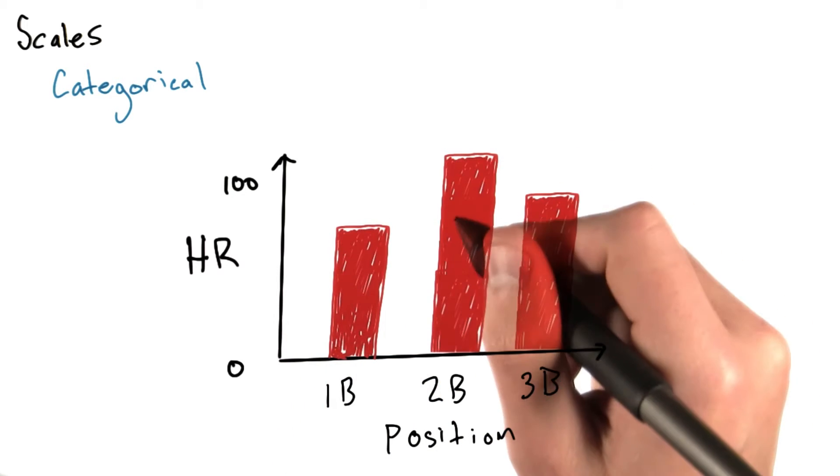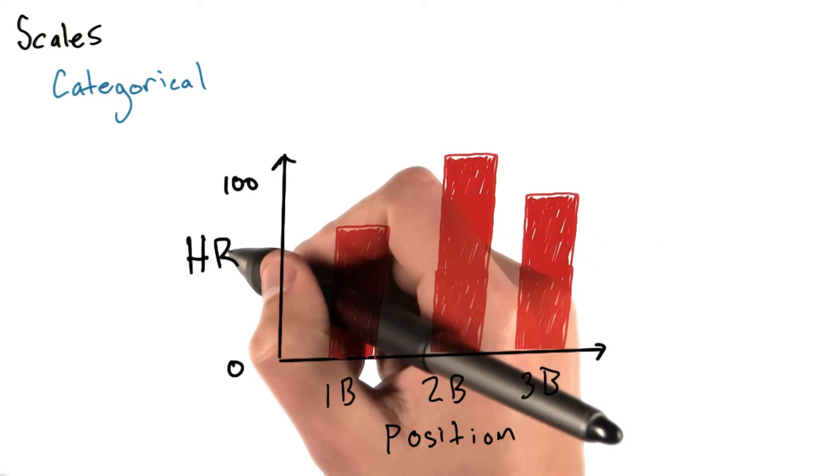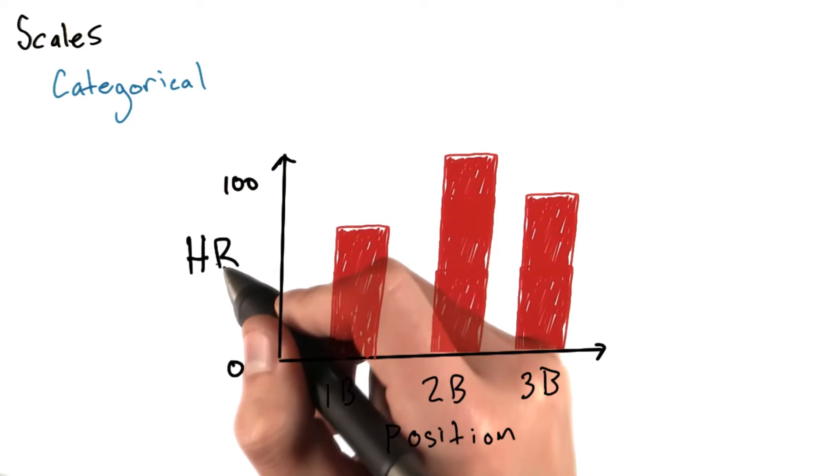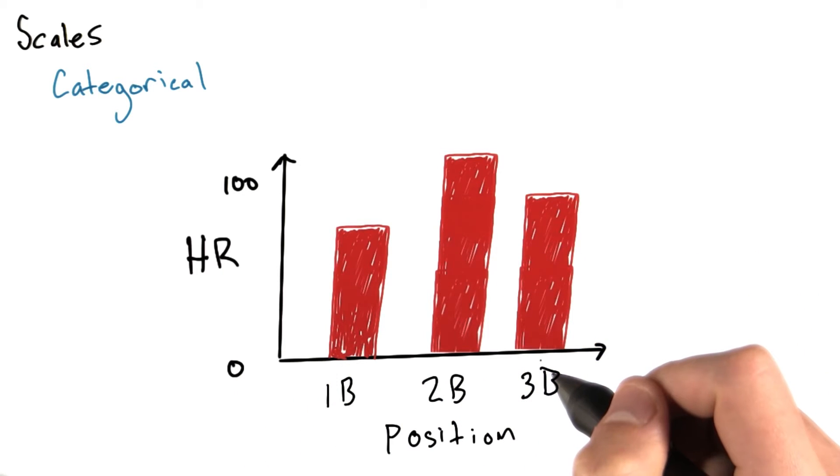A bar plot, for example, can use a categorical scale on the x axis and a numerical scale on the y axis. So let's say that we were measuring home runs by position. The positions we've used here are unordered,